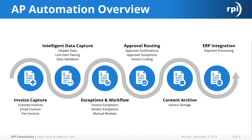In a perfect AP automation world, you would capture the invoice via scanner, email, or fax. Once captured, you then want to capture the data — header data, line item data, and data validation. After that, you handle any exceptions or workflow: invoice exceptions, vendor exceptions, and manual reviews typically handled by the AP department. Then come the approval routes, with notifications and invoice coding. Finally, you store the document and integrate with your ERP system to process the payment.